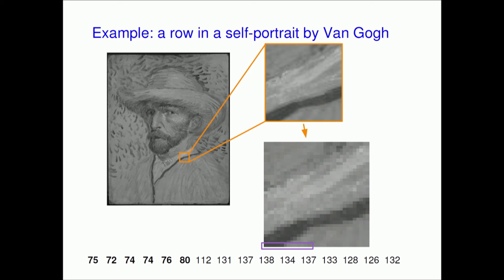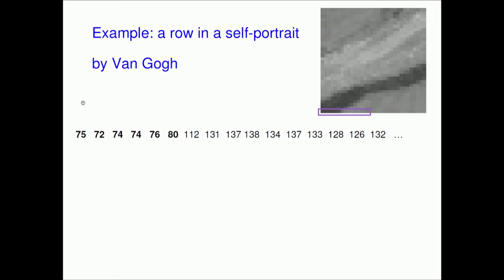We're going to do some manipulations to those numbers, imagining them being done on the whole picture. One thing already apparent is that most of those numbers are very similar to their neighbours. That is very typical of a high-resolution image of a natural scene — pixels corresponding to the same region are very close. There are sudden transitions, like edges, but they're rare.